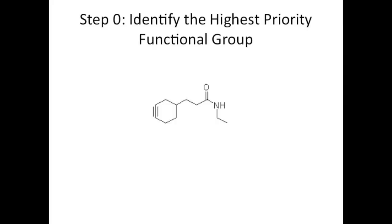So let's begin. Just like they added a zeroth law to thermodynamics, I'm adding a step zero to nomenclature, and that is to identify the highest priority functional group. As I said in my intro, typical nomenclature questions on the MCAT have multiple functional groups and you need to identify the highest priority one in order to name it properly.